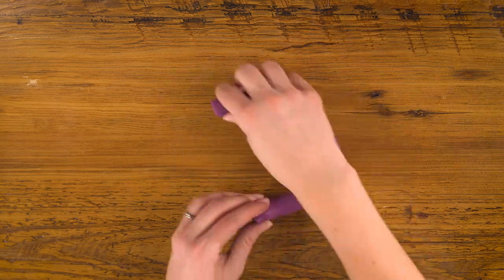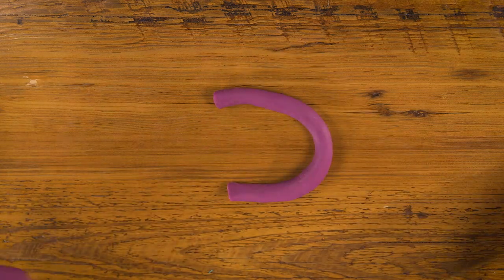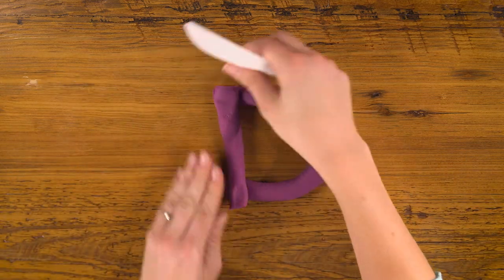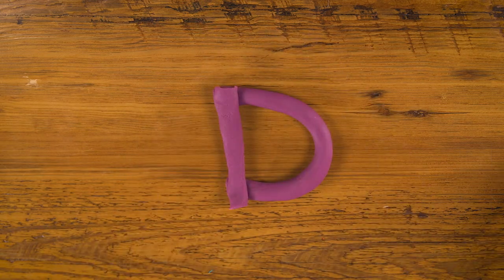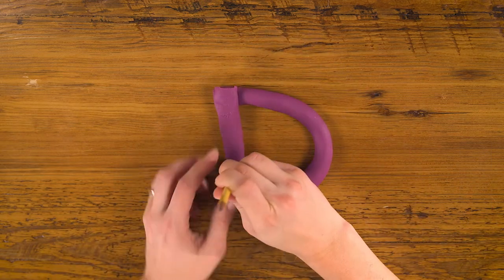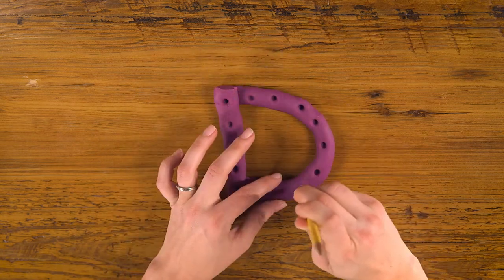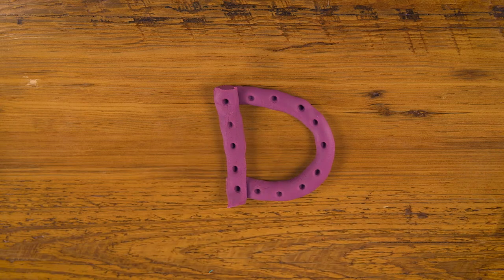Now to make the D, I'm going to flip over my C and take some more of my rope I just made and put it on the end. To make it more interesting, I'm going to add some dots with the back of my pencil. D for dots.